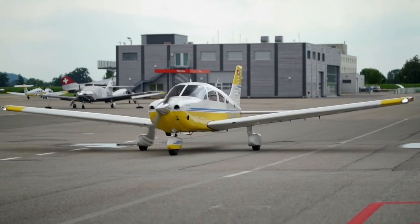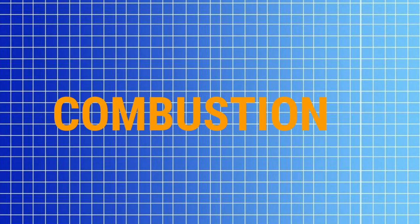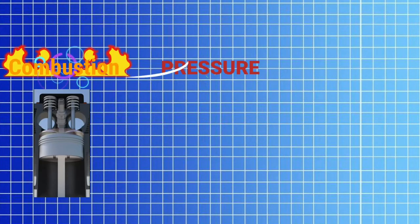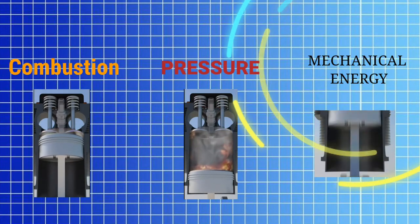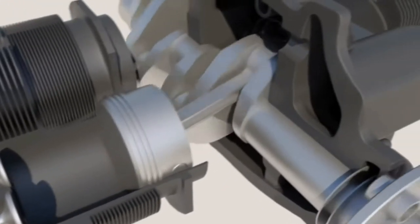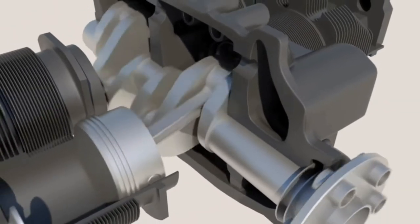The operating principle of this engine is to convert pressure from the combustion of a fuel-air mixture inside the piston into mechanical energy used to turn a shaft, which in turn rotates the propeller. In a nutshell, many controlled explosions inside a chamber expand the gases and force a piston down, which is connected to a crankshaft, turning it, and thus the propeller produces thrust.